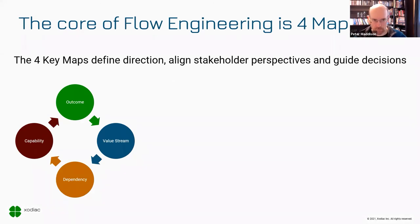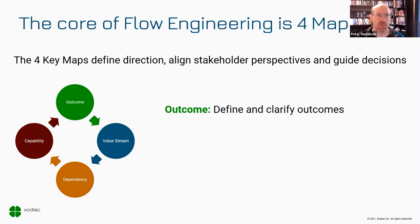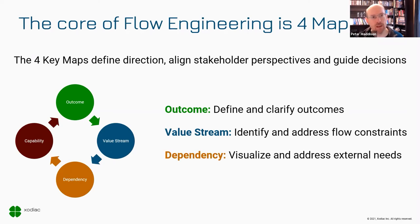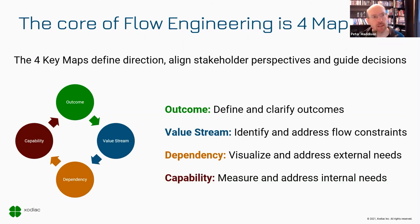The core of flow engineering is these four maps. The four key maps define the direction, align stakeholder perspectives, and guide our decisions as we move through the process. We've got outcome mapping, which helps us define and clarify our outcomes. We have value stream mapping, which helps us identify and address flow constraints. We have dependency mapping, which helps us visualize and address the external needs of the system. And we have capability mapping, which helps us measure and address all of the internal needs.